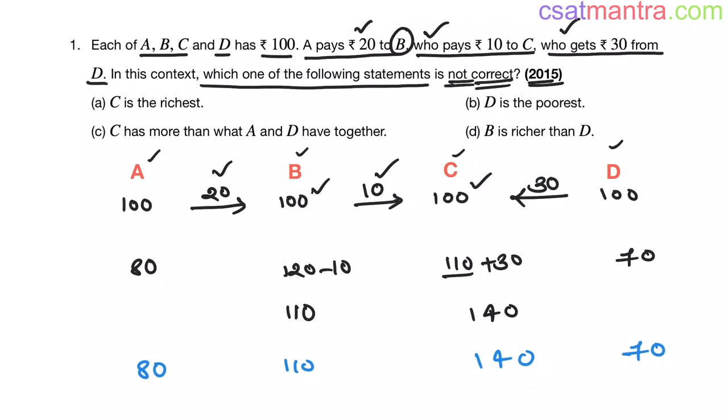Now, we are asked to find which one of the following statements is not correct. Don't make this mistake in a hurry, friends. We are asked to find incorrect statement, not correct statement. Whenever you come across these kind of questions, read it carefully. In GS paper 1, there is a high chance you may make a mistake.